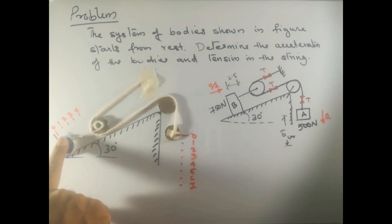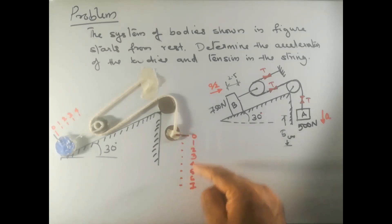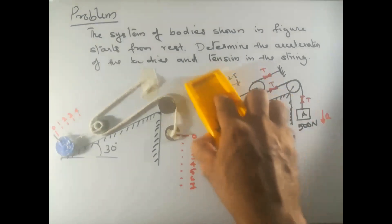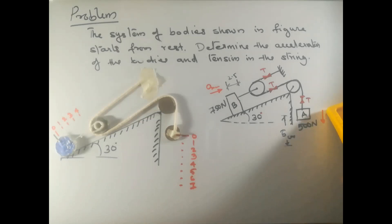Checking the other way: when block B moves back through 3 centimeters, block A moves through 6 centimeters. This confirms our assumption — if block A has acceleration 'a', block B has acceleration a/2. Equivalently, if block B has acceleration 'a', block A has acceleration 2a.